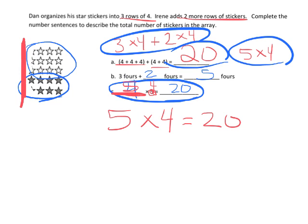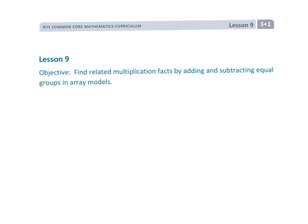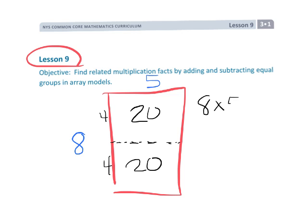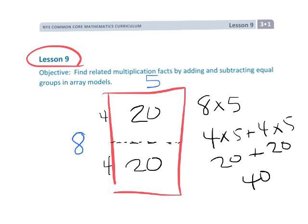That is Lesson 9, where we are laying the groundwork. Eventually students are going to be seeing an array like this—an 8 by 5 array—and they are going to be learning how to chop that array into two smaller arrays. Students will see that 8 times 5 is really 4 times 5 plus another 4 times 5, which is really 20 plus 20, which is really 40. This is how students are going to build fluency with their multiplication facts.